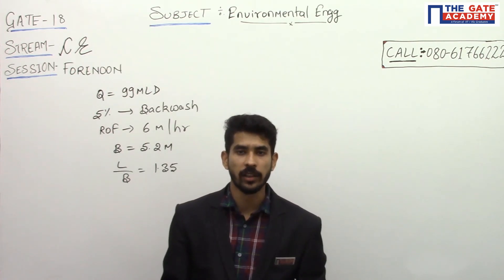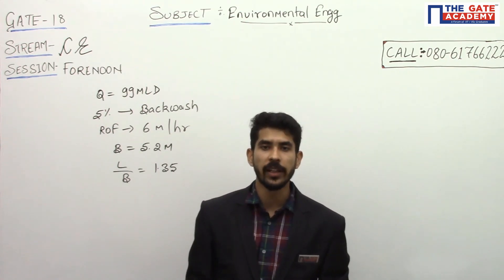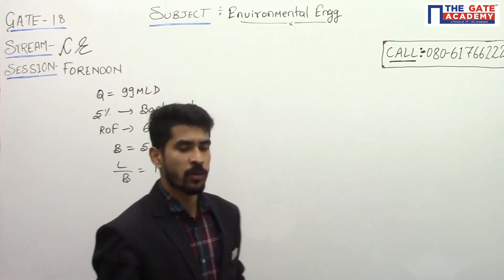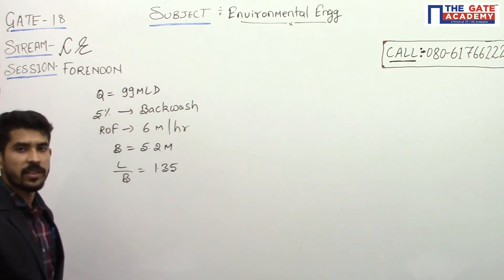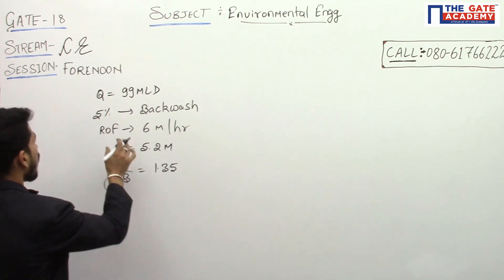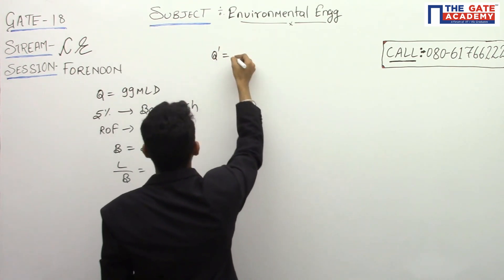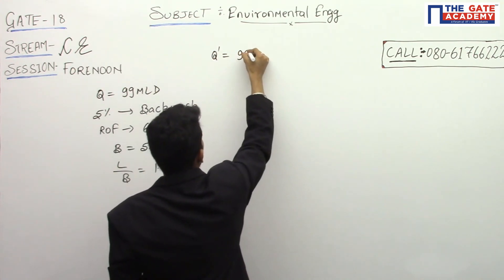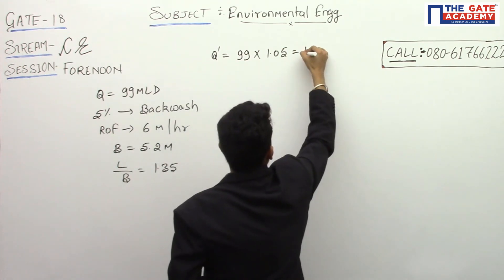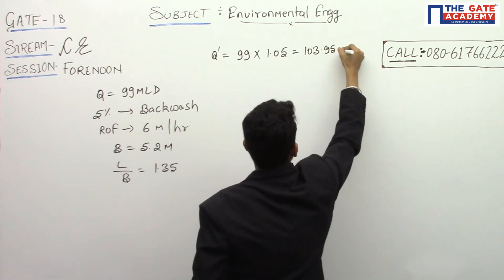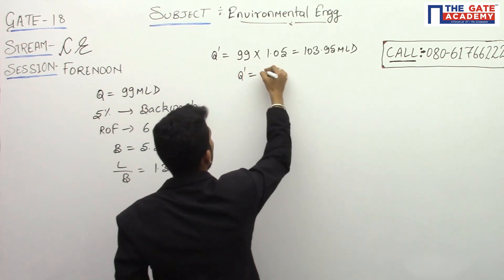The options are: Option A is 19, Option B is 20, Option C is 21, and Option D is 22. Now, 99 MLD is the treated water, out of which 5% is the backwash water. So an additional 5% is required for backwashing, making our effective discharge 99 MLD plus 5%, which equals 103.95 MLD.